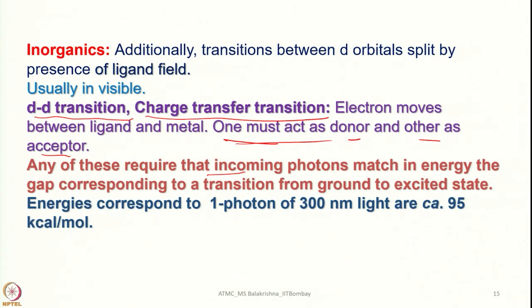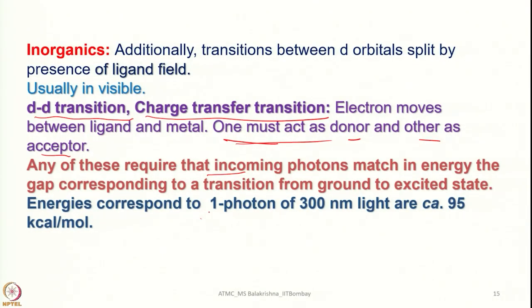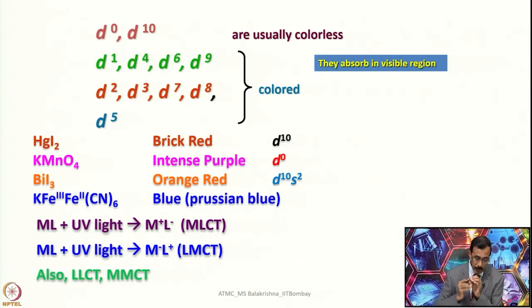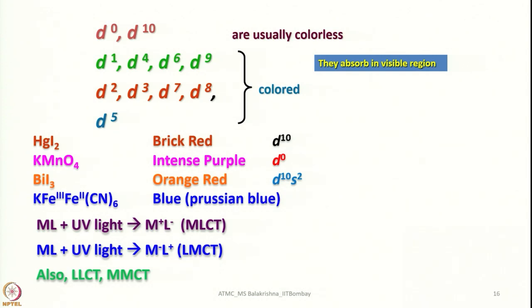That is obvious. For example, if we consider the HOMO here and the LUMO here, any transition between two energy levels requires us to supply the energy that matches the energy difference between those two levels. The energies correspond to one photon of 300 nm light, which is approximately 95 kcal/mol.